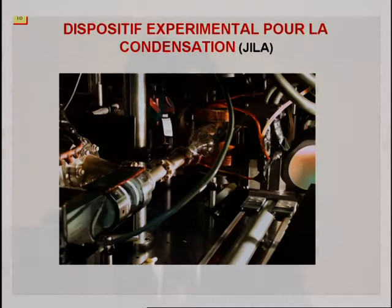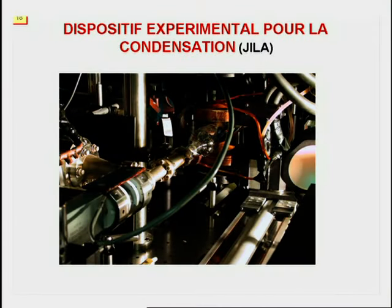C'est le même mécanisme qui détermine, par exemple, le refroidissement d'une tasse de café lorsqu'on souffle dessus. Cette image montre un dispositif typique utilisé dans les laboratoires. On voit ici les lasers, la cellule avec l'ultra-vide, les bobines qui génèrent les champs magnétiques de confinement et de piégeage. Des dispositifs semblables sont utilisés dans tous les laboratoires où on travaille avec le gaz ultra-froid.